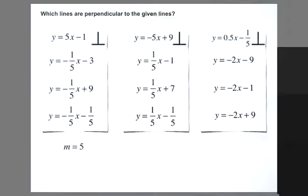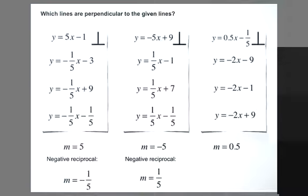For m = 5, the negative reciprocal is -1/5. For m = -5, the negative reciprocal is 1/5. And for m = 0.5, the negative reciprocal is -1/0.5. If you do the calculation on your calculator, you'll find that equals -2.